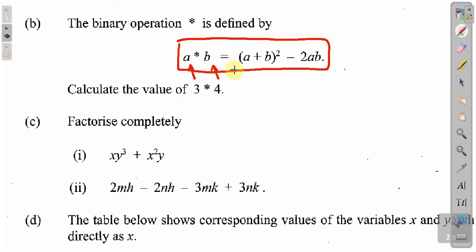So anywhere you see an a into this right hand side of the equation, you're going to put 3. And anywhere you see a b on the right hand side of this equation, you're going to put 4. That's what they're pretty much doing. So 3 asterisk 4 is equal to a which is 3 plus b which is 4.